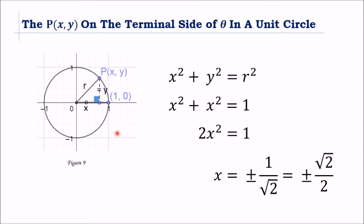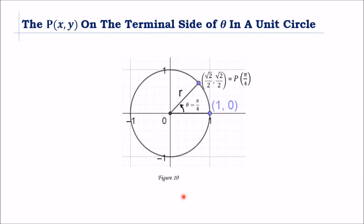We get x = ±√2/2. Since we are in the first quadrant, x will have a positive sign: x = √2/2. Now we have P of π/4 equals (√2/2, √2/2).